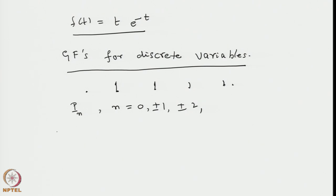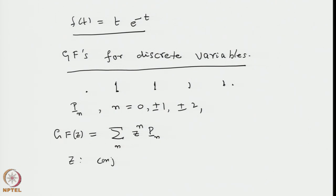We have a family of generating functions constructed as sums of z to the power n times P(n), summed over all n. This generating function is now a function of the variable z, so z is the conjugate variable — it is conjugate to the discrete points n — and z is of course a continuous variable. It can be complex, and its domain depends on the summability of this series over the entire domain of n.